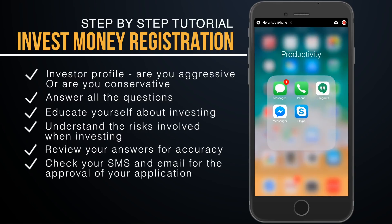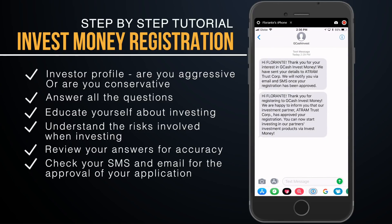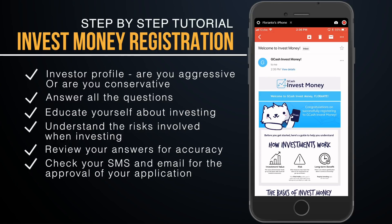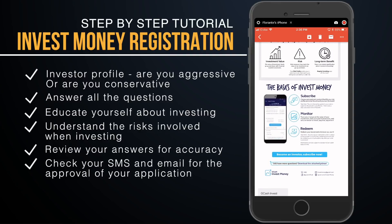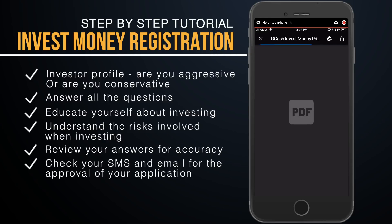It looks like we already have the approval, and it only takes about five to seven minutes to get it. You will receive a notification via SMS and also via email. I would highly suggest that you also read through the document that will be sent to your email address. If you can download it and print it out, much better, so you can read all the details and some samples on what investing is and how you can get started with investing using Invest Money.